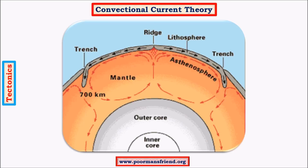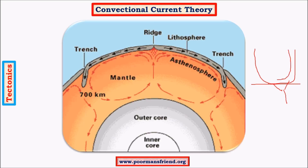Earth's interior is at very high temperatures compared to the surface. The inner core is at about 6,000 to 7,000 degrees Celsius, the outer core is about 3,000 to 4,000 degrees Celsius, and the mantle temperature varies while the crust is only a few hundred degrees Celsius. A simple example of convection is a boiling pot of water: water at the bottom gets very hot, becomes less dense, and rises to the top, while cooler denser water at the top sinks to the bottom. This cycle repeats as long as there is a heat supply.